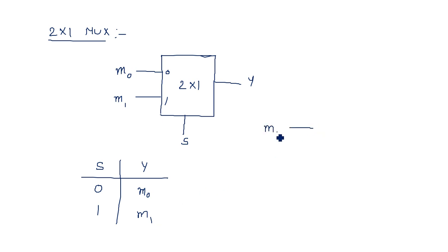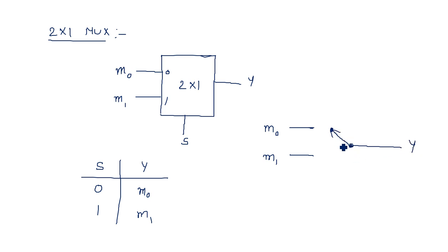If the selection line S equals 1, then Y is connected to m1. Internally, the multiplexer works like a switch — m0 and m1 are the two inputs. If S equals 0 the switch connects to the first position; if S equals 1 the switch connects to the second position, and output comes accordingly.